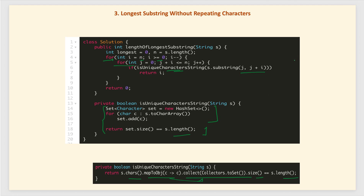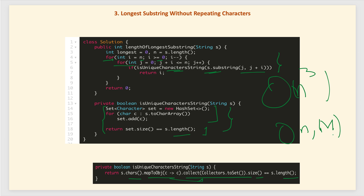The time complexity of this solution is O(n³) because we have two nested for loops and another loop inside the helper method. The space complexity is O(min(n, M)), where n is the length of the string and M is the number of unique characters.